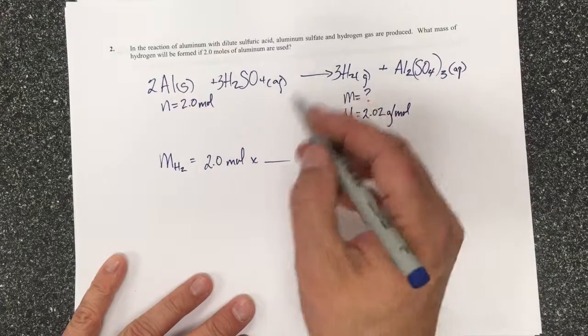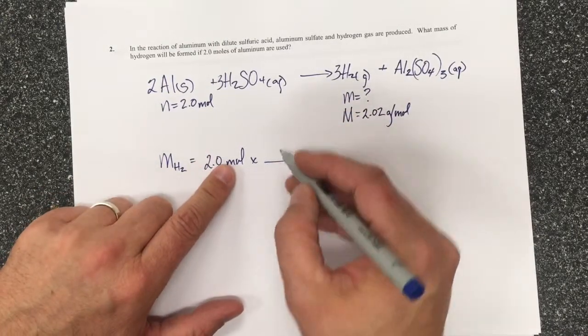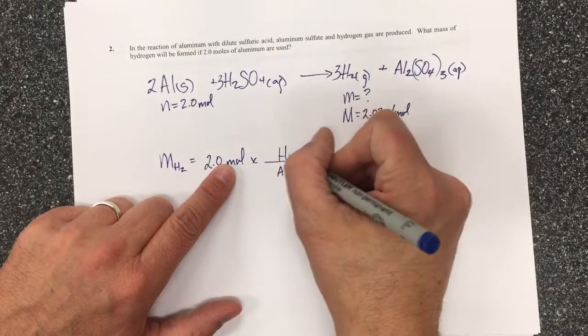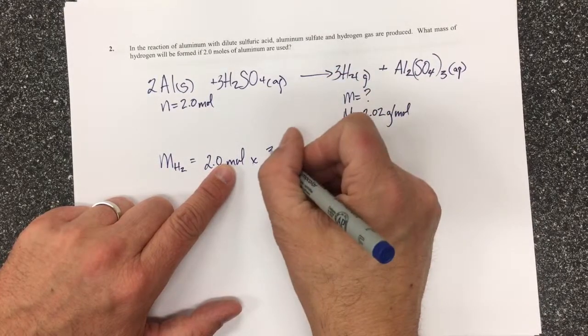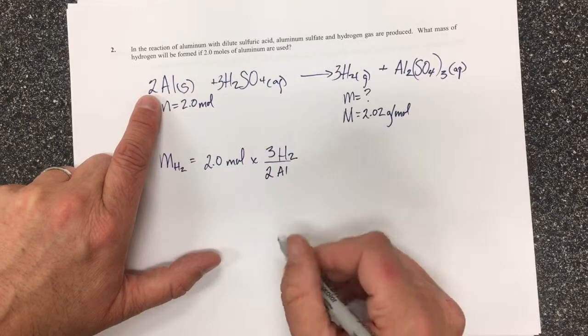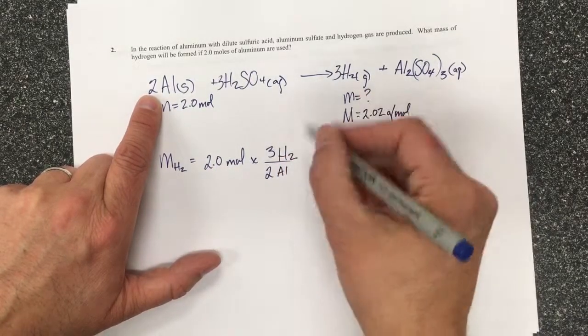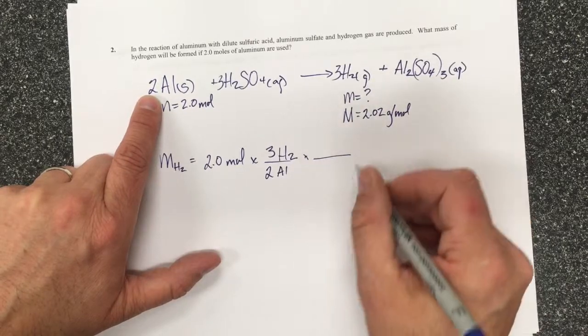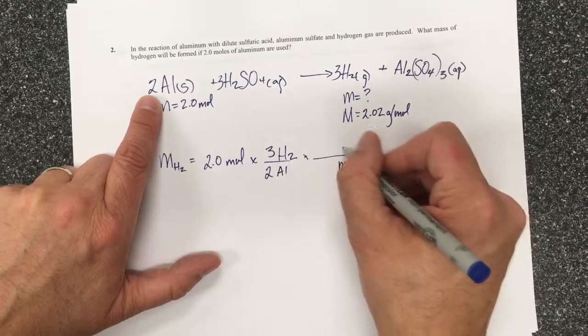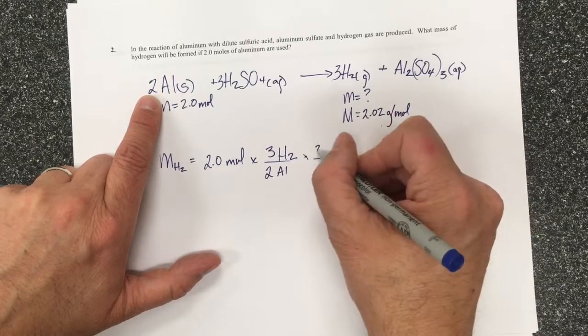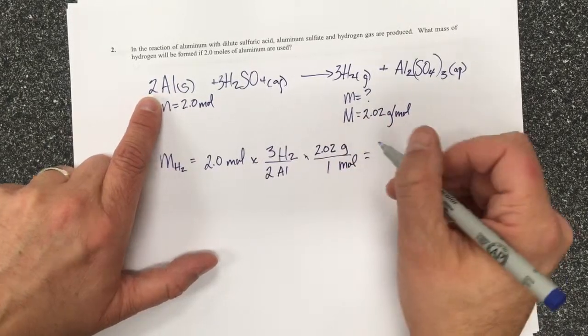I've already got that step done but I don't want aluminum, I want to get rid of it and I want to be left with hydrogen. So I get three hydrogens for every two aluminum and so this step is converting my mole of aluminum to hydrogen. And then I don't want mole, I want to be left with mass and the hydrogen molar mass is 2.02 per one mole.